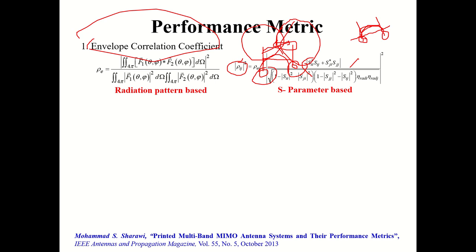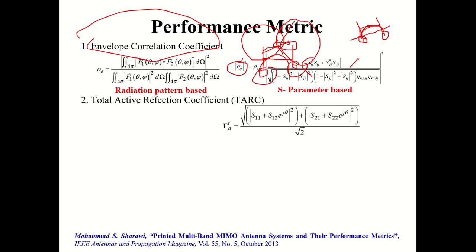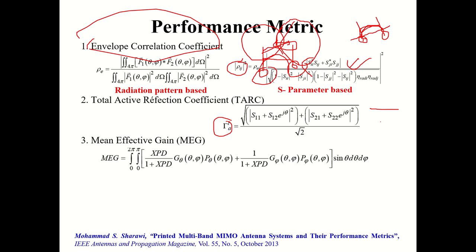The second parameter is Total Active Reflection Coefficient (TARC). In a practical environment, conventional S-parameters alone are not sufficient. TARC is evaluated as the square root of total reflected power divided by total incident power. For a two-element MIMO, there is a specific formula using S-parameters to calculate TARC.